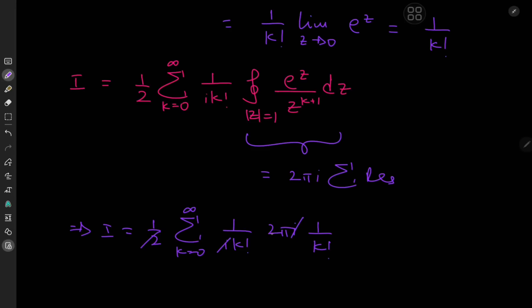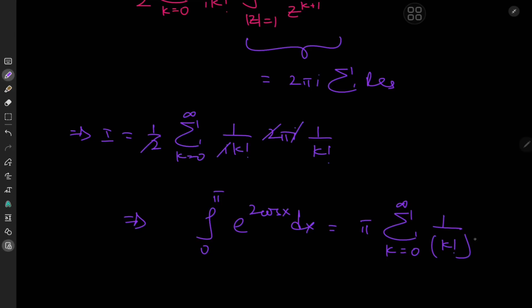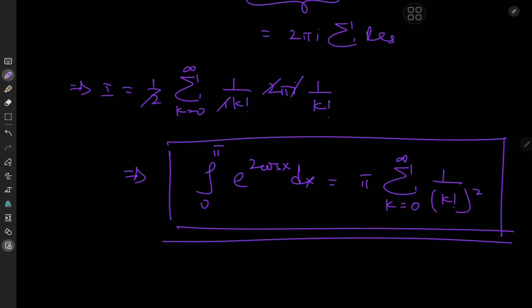After cancellation, we find that the integral from zero to pi of e to the two times cosine x dx equals pi times the sum over k of one over k factorial squared. This unfortunately does not have a very nice closed form like other infinite series we encounter, but it's still a pretty cool result with squared factorials and pi. The right-hand side converges to approximately 7.16. I hope you enjoyed the video — be sure to like and subscribe, follow me on Instagram, and if you like the content, consider supporting me on Patreon. All links are in the description box.